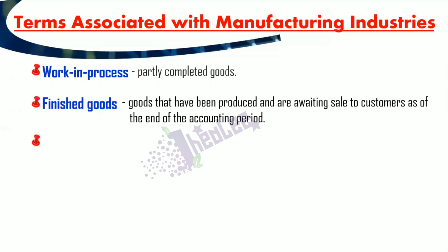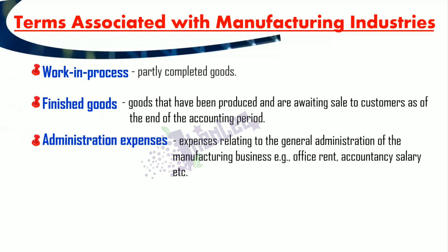Our next term is administration expenses, which speak to expenses relating to the general administration of the manufacturing business. Examples include office rent, accountancy salary, office cleaning, and office manager salary. Anything you see with 'office' — those are administration expenses.